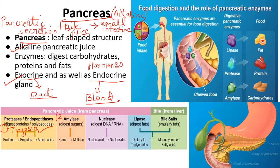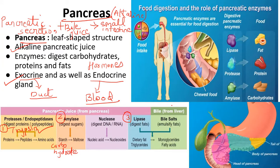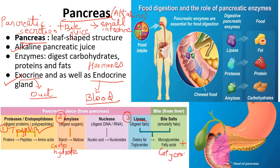The second important enzyme is amylase, which digests starch and converts it into maltose. Starch is a specific carbohydrate, and amylase converts it into maltose. The third important enzyme is lipase. Lipase acts on the small fat globules produced by bile during emulsification. The large fat globules were already converted into small globules by bile, and now lipase breaks those small fat globules down into fatty acids and glycerol. These — fatty acids, glycerol, maltose, and amino acids — are the simplest compounds that can be absorbed by the blood.